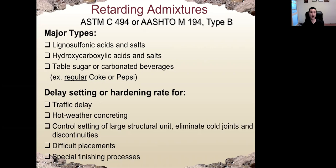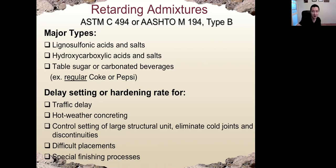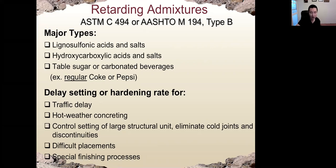The major types of retarder are almost all organic materials, such as lignosulfonic acid, hydroxycarboxylic acid and salts, or table sugar. Regular cola or Pepsi can be used to increase the setting time. We can use retarders in situations such as traffic delay, hot weather concreting — to reduce temperature — or to control the setting of large structural units, namely to avoid cold joints, or when we have difficulty placing concrete or need a long time to finish the concrete.